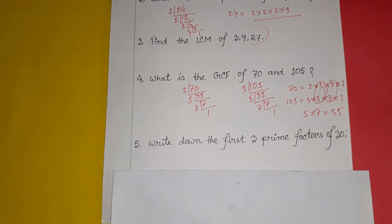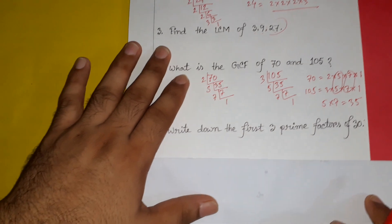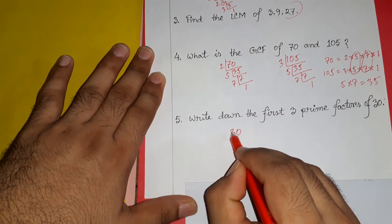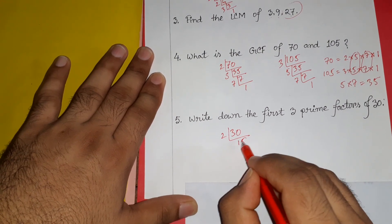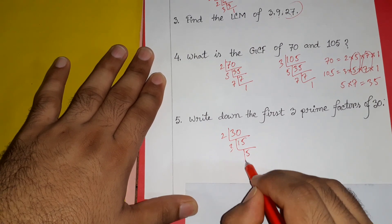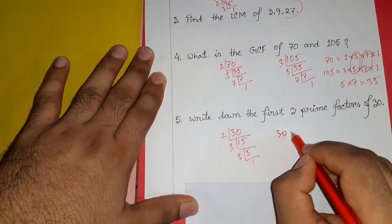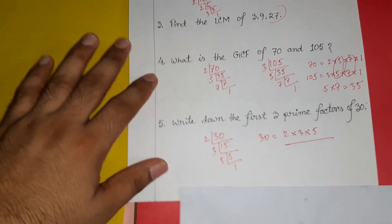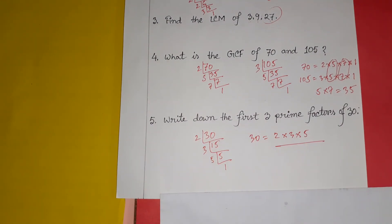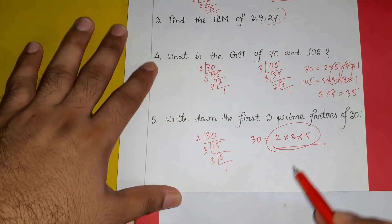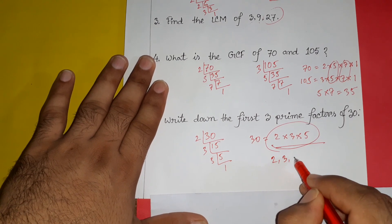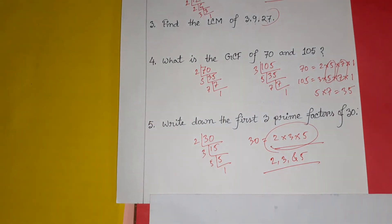Question number 5: write down the first 3 prime factors of 30. We analyze 30: divide by 2 to get 15, then divide by 3 to get 5. So 30 equals 2 multiplied by 3 multiplied by 5. The first 3 prime factors of 30 are 2, 3, and 5. Those are the answers.